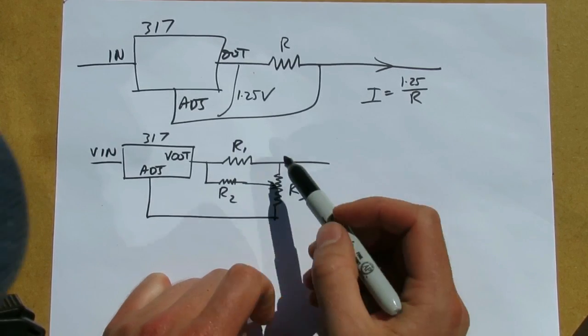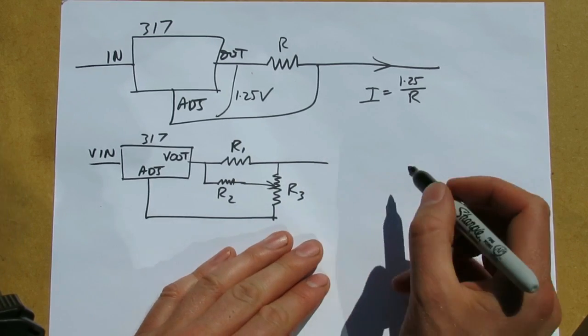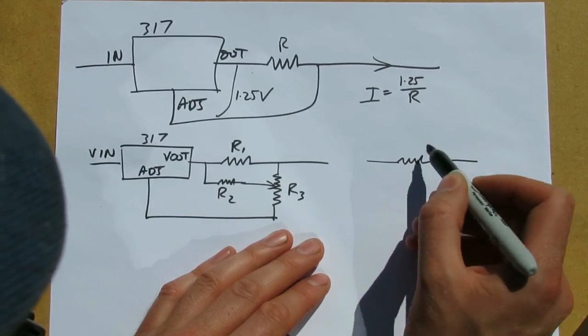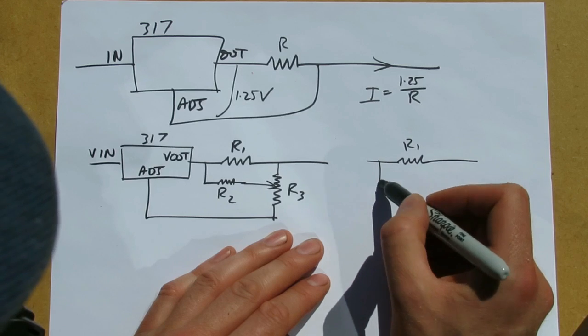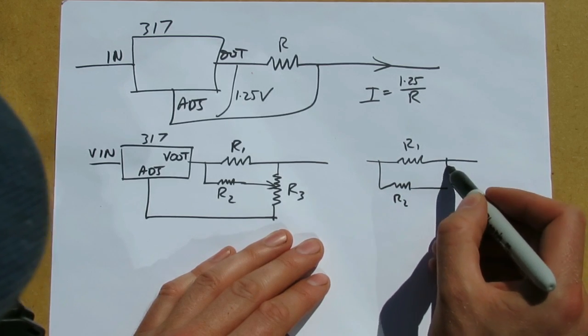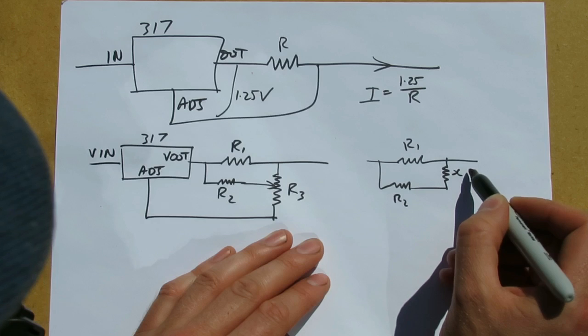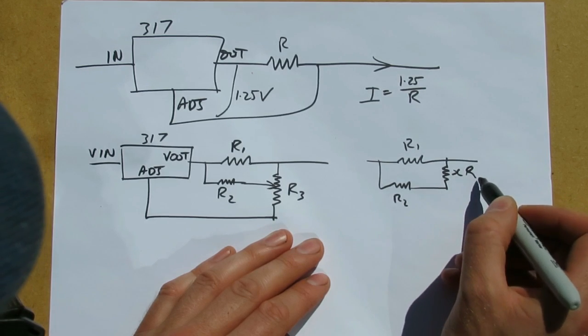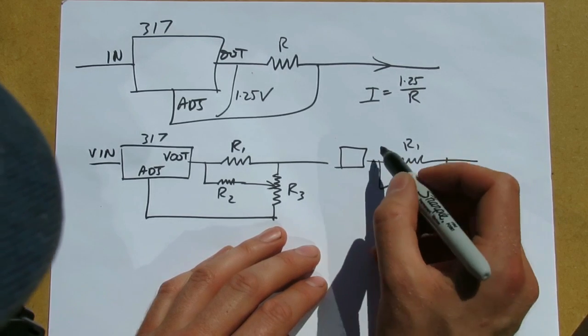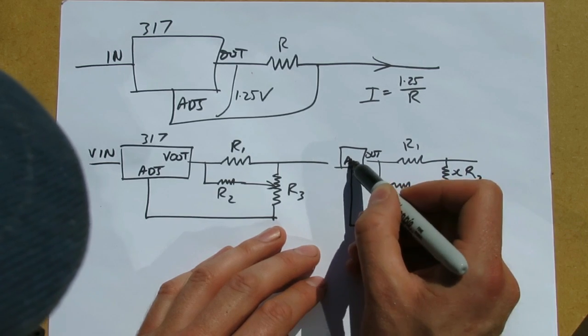If we simplify the resistors around here a little, that's equivalent to R1, R2 again, and XR3, with that being the output terminal and that being the adjustment terminal.